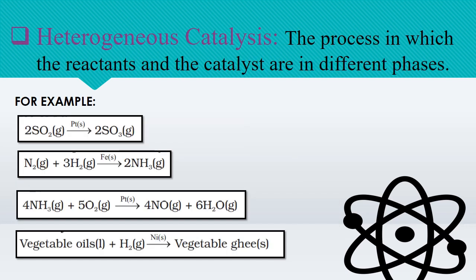Heterogeneous catalysis is the process in which the reactant and the catalyst are in different phases. For example, the reactant is in gaseous phase whereas the catalyst is in solid state. An example is oxidation of sulfur dioxide into sulfur trioxide, where sulfur dioxide is in gaseous phase and the catalyst is in solid phase.